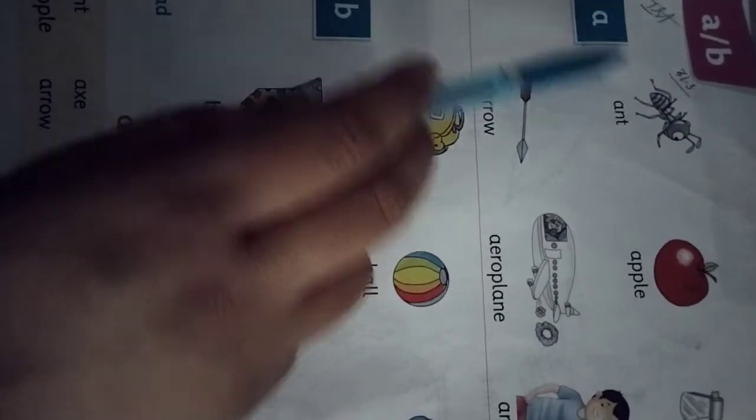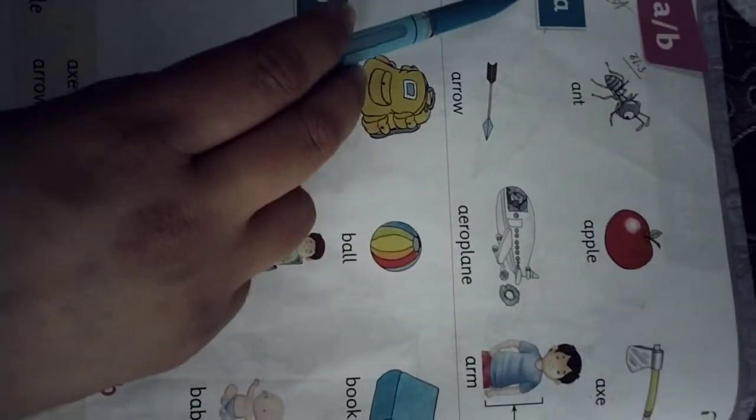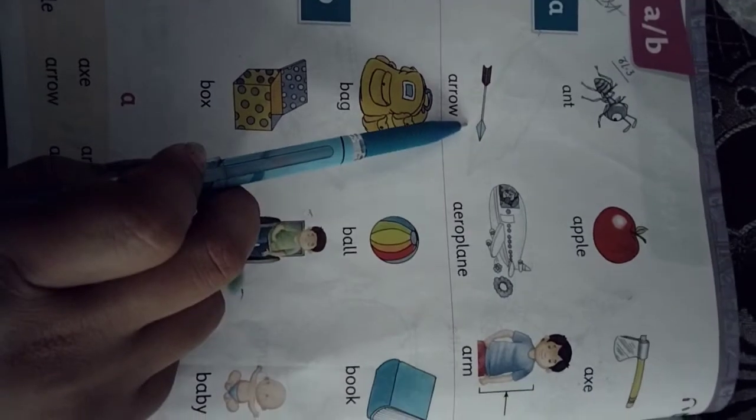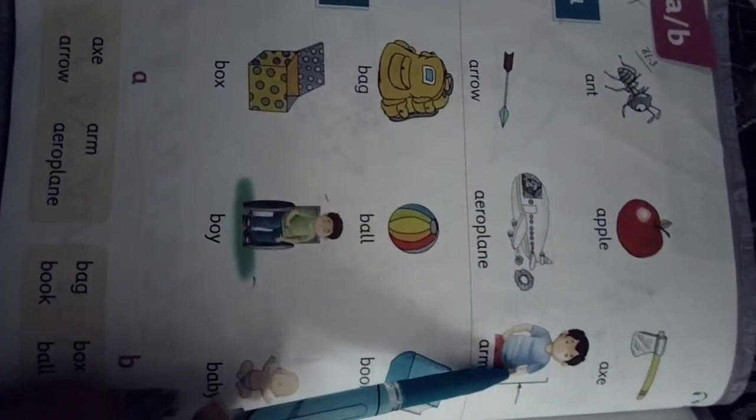Letter A. A for Ant, A for Apple, A for X, A for Arrow, A for Aeroplane, A for Arm.